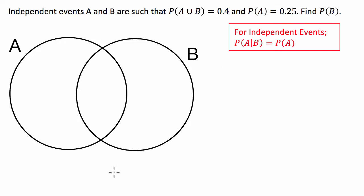G'day guys, we've got a probability question today which involves independent events. We've got A and B such that the probability of A or B occurring is 0.4 and the probability of A occurring is 0.25. Now we're asked to find the probability of B.